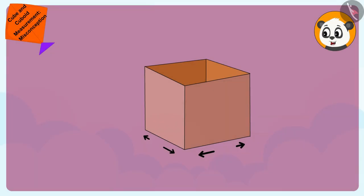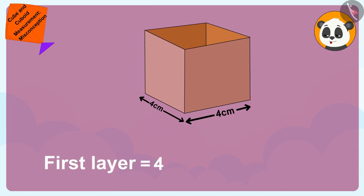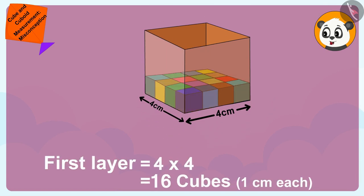I will find the volume of this cube-shaped box. Shere Khan, the sides of the cube-shaped box are 4cm each. This means the first layer will have 4 times 4, 16 cubes of dimension 1cm each.